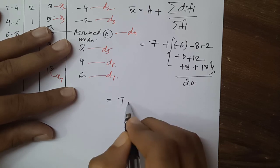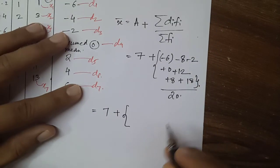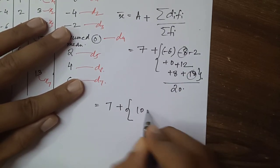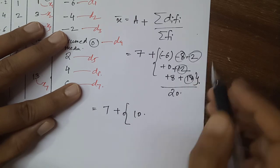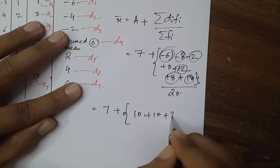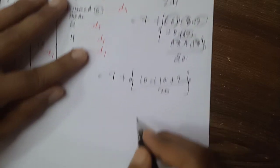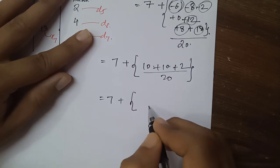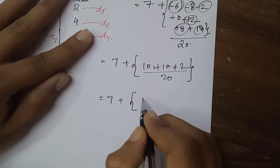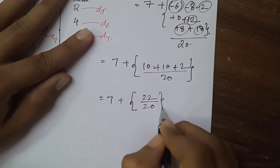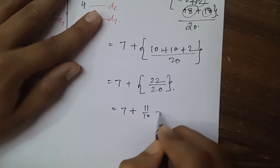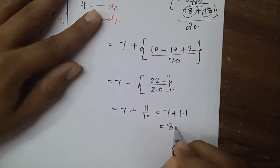This equals 7 plus: grouping the terms — 18 minus 8 = 10, plus 12 minus 2 = 10, plus 8 minus 6 = 2 — all divided by 20. So we get 7 + (10 + 10 + 2)/20 = 7 + 22/20 = 7 + 11/10 = 7 + 1.1 = 8.1. This confirms the assumed mean method gives the same answer.